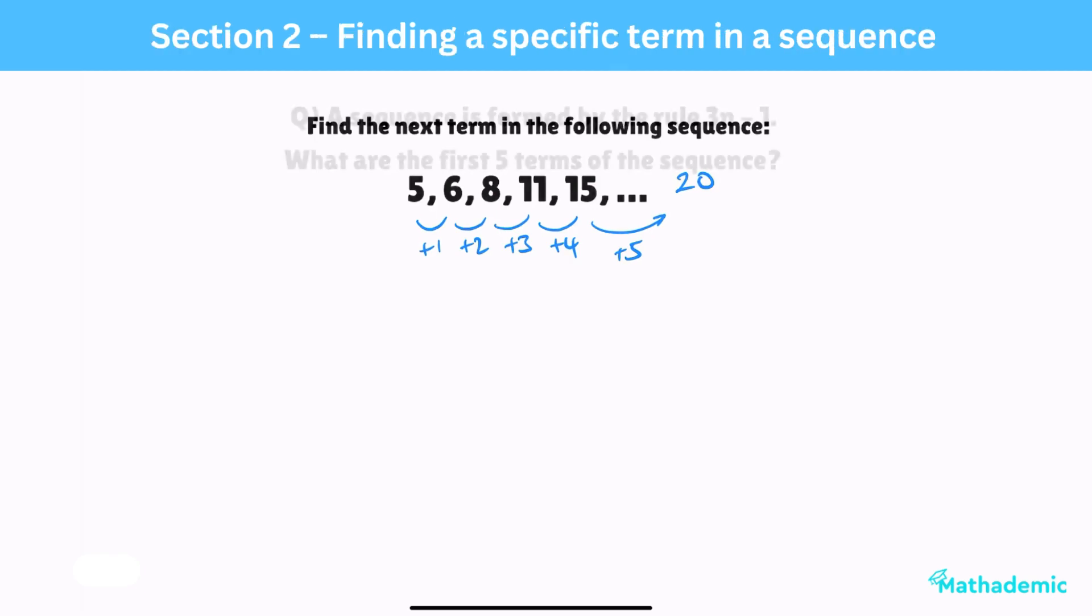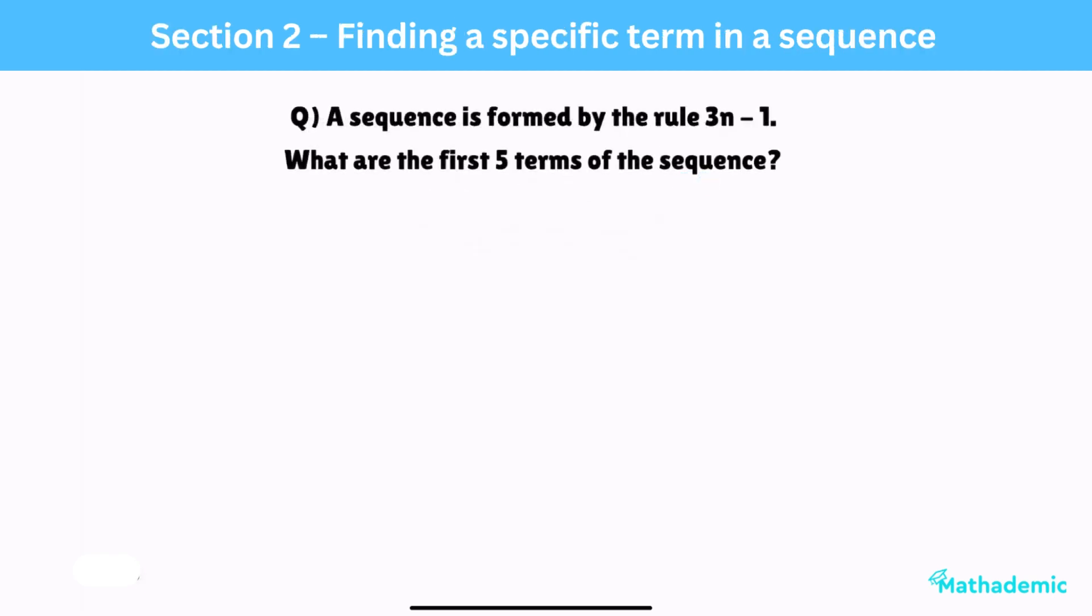Section 2: Finding a specific term or terms in a sequence. The next section deals with finding specific terms in a sequence. A sequence is formed by the rule 3n-1. What are the first 5 terms of the sequence?